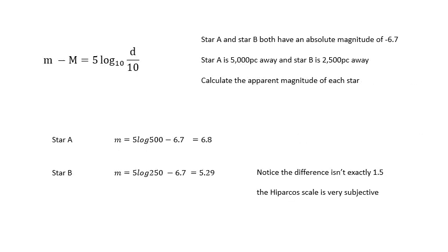Let's have a look at this: star A and star B both have an absolute magnitude of -6.7. Star A is 5,000 parsecs away, star B is 2,500 parsecs away. In other words, star A is twice as far away. Calculate the apparent magnitude of each star. Well, we would predict that the amount of light that we get from A would be about a quarter of the amount of light that we get from B. So from what I worked out on the last slide, the difference in apparent magnitude should be about one and a half, something like that. So I've worked out the apparent magnitude of both stars using that equation. Notice that the difference isn't exactly 1.5, and I'm putting that down to the Hipparchus scale being very subjective.